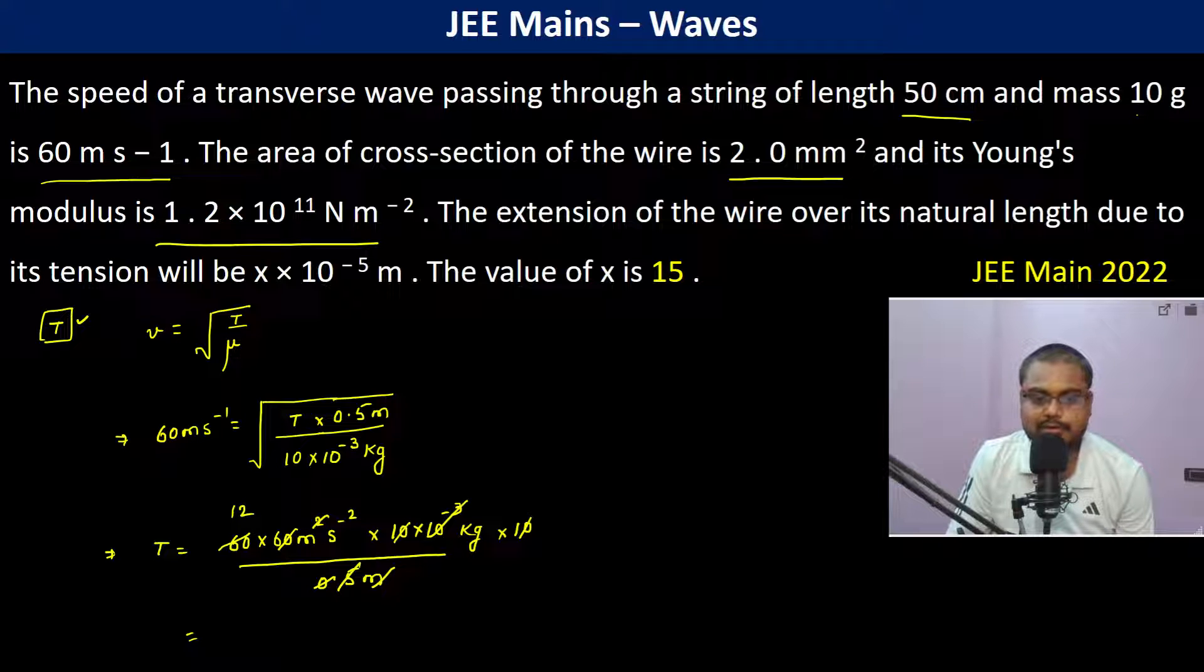So 10 to the power minus 3 is gone. Now 5, this becomes 12, so 12 into 6 is 72, so 72 newtons is the tension.